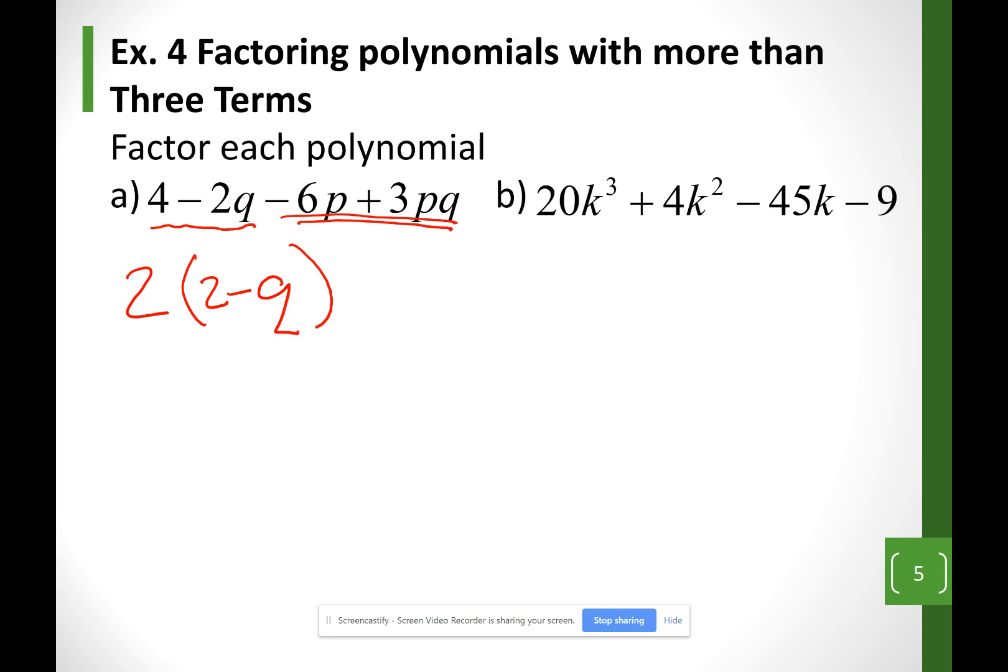Divide both terms by 2, and we're going to have 2 minus Q. Now, looking at the last two terms, let me factor out a negative 3P. I'm going to divide both of them by a negative 3P. Notice I'm dividing by a negative, so don't forget to switch the sign.